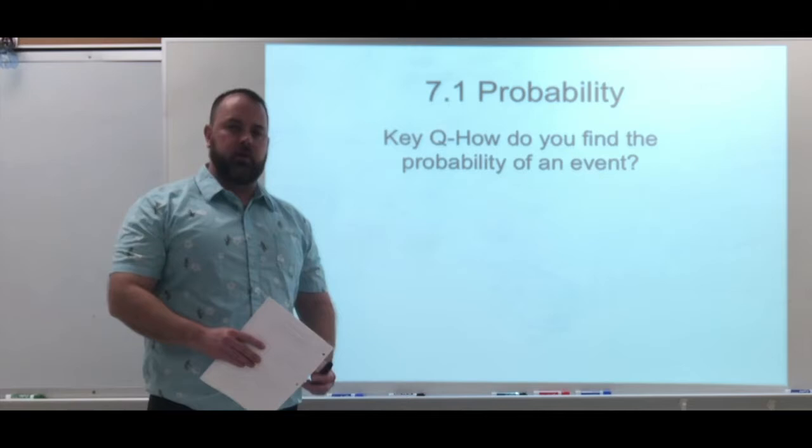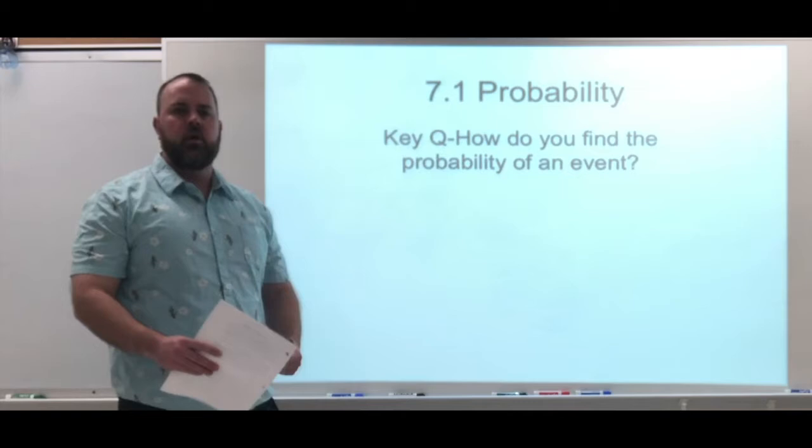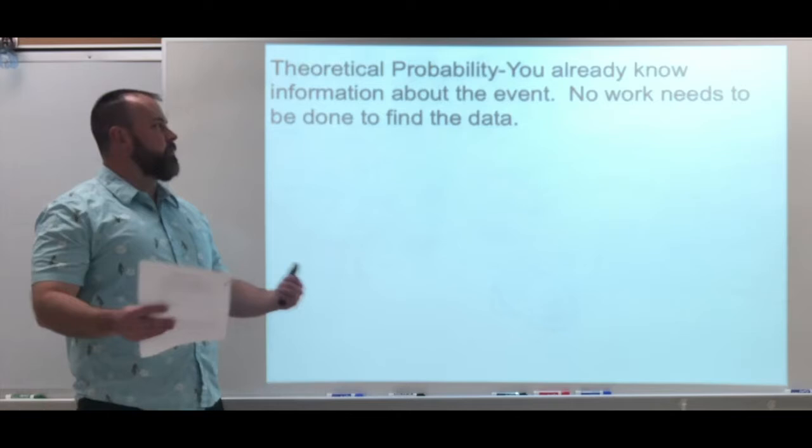Section 7.1 is looking at probability — how do you find the probability of an event? You've hopefully already done a lot of simple events in other math courses. We're going to be looking at some complex events in this section, and different types of probability that we're going to be talking about throughout this chapter.